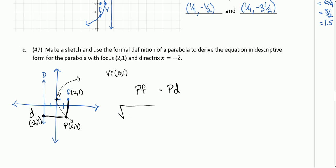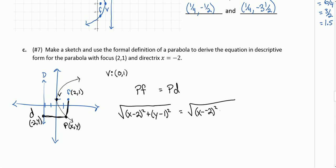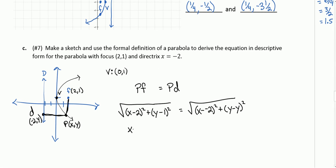Using the distance formula, the distance from point P to focus F is: square root of (X minus two) squared plus (Y minus one) squared. That equals the distance from P to D: square root of (X minus negative two) squared plus (Y minus Y) squared. Squaring both sides gives: (X minus two) squared plus (Y minus one) squared equals (X plus two) squared plus zero.